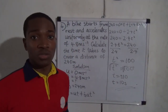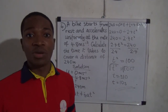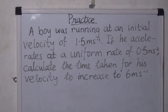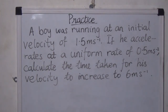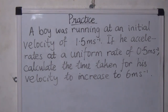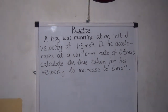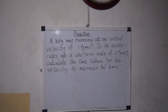Now here's a practice question for you. A boy was running at an initial velocity of 1.5 meters per second. If he accelerates at a uniform rate of 0.5 meters per second squared, calculate the time taken for his velocity to increase to 6 meters per second. Solve this question and compare your answer with mine. Thank you for watching, have a nice time.